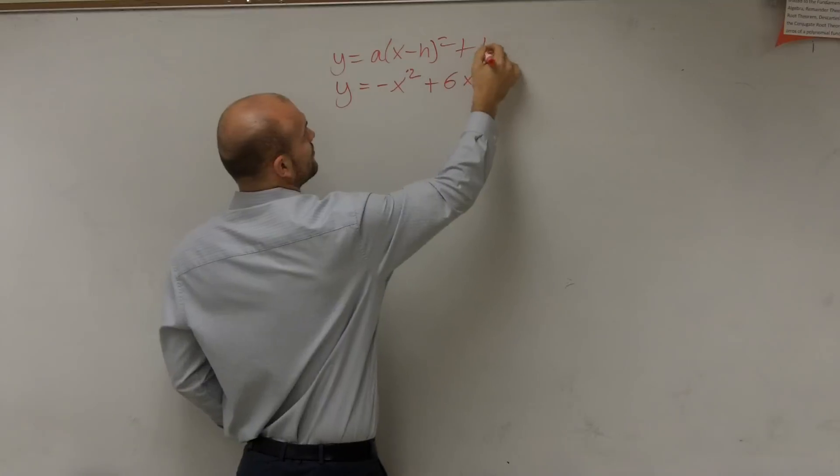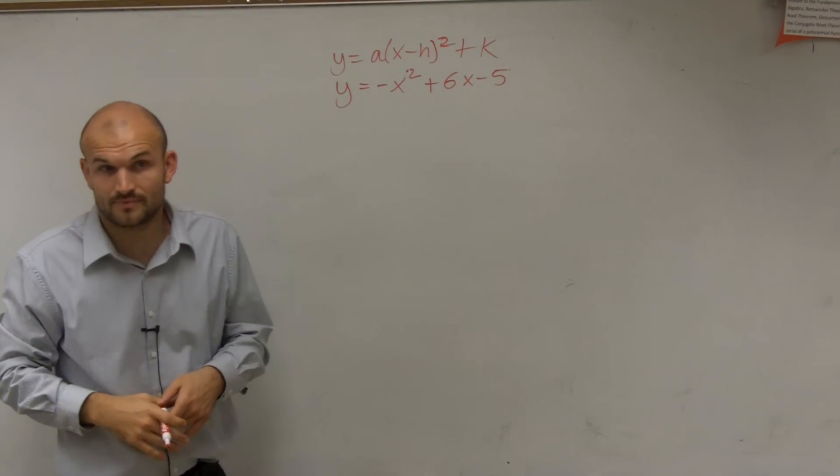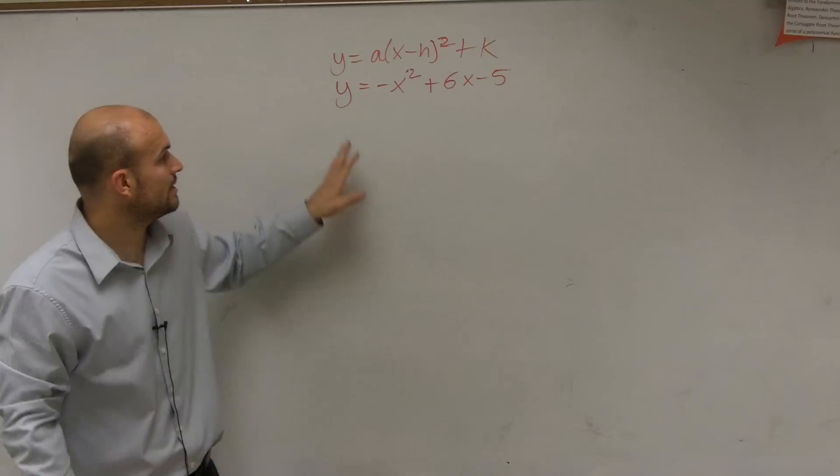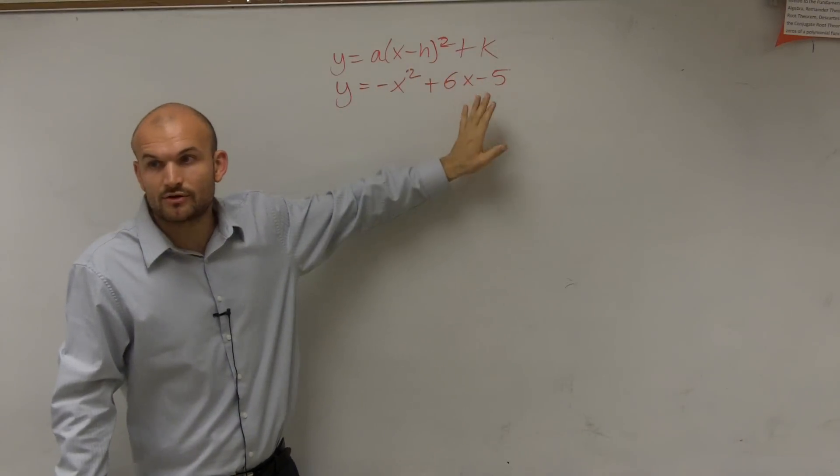x minus h squared plus k. Right? So we've got to put it into this format. So to be able to put it into this format, what we're going to do is we're going to have to create a perfect square. So by creating a perfect square, what I'm going to simply do is what we call completing the square.